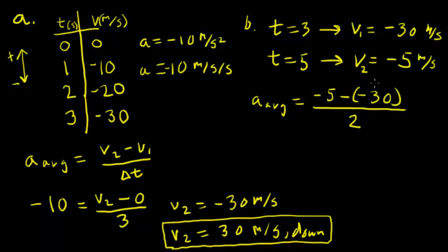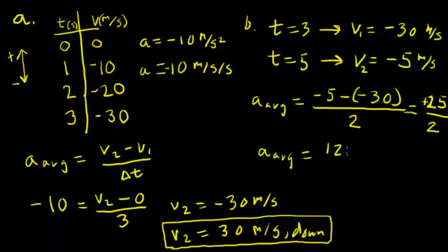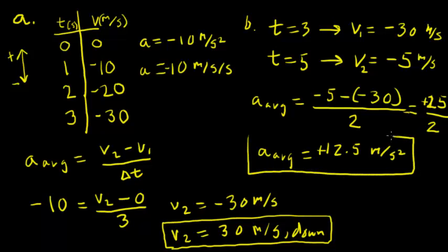So we have negative 5 minus negative 30, which gives a change of positive 25, occurring over 2 seconds. The average acceleration is 12.5 meters per second squared, and it comes out positive — upward — even though the skydiver is falling down the entire time. This reflects the fact that he was falling at a very high rate at the start, and after 2 seconds, he's still falling but at a slower rate. His velocity has become more upward during those 2 seconds. And that is how we solve Example 2.2.